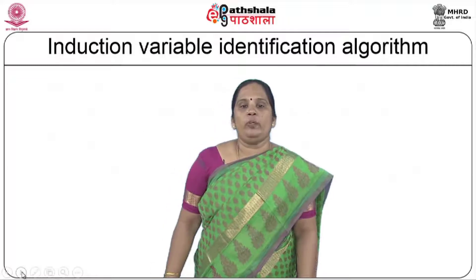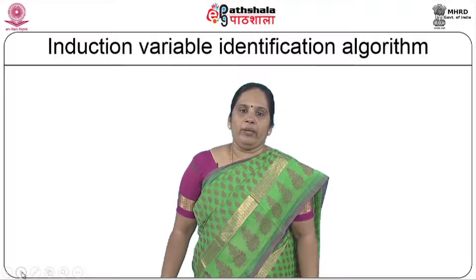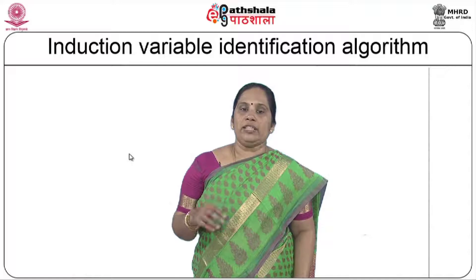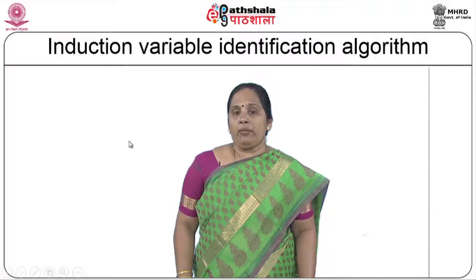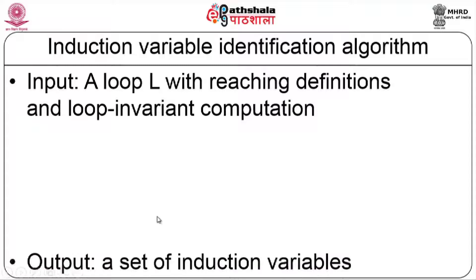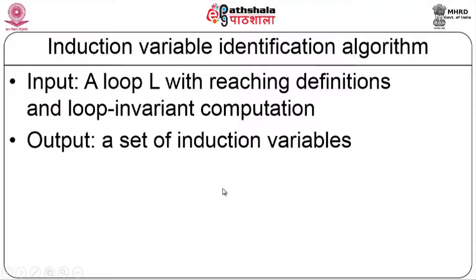To identify induction variables, the first step is to identify them, and the second is to get rid of them using strength reduction — these two go hand in hand. The algorithm for induction variable elimination takes a loop L with reaching definitions and loop invariant computation as input. Loop variant statements are considered for identifying induction variables, and the output is a set of basic and derived induction variables.